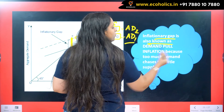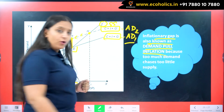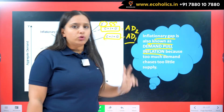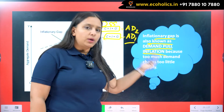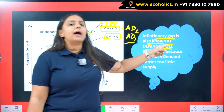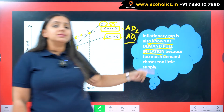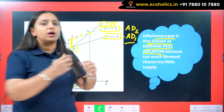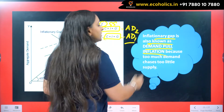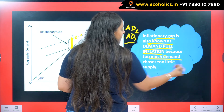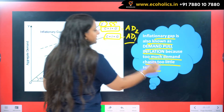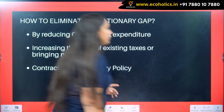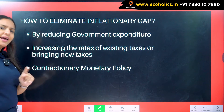Inflationary gap is also known as demand-pull inflation. There are basically two types of inflation: demand-pull and cost-push. This inflationary gap is caused by demand-pull because the inflation is caused by an increase in demand — by the pulling of demand. Too much demand chases too little supply. This is the diagrammatic presentation of inflationary gap.